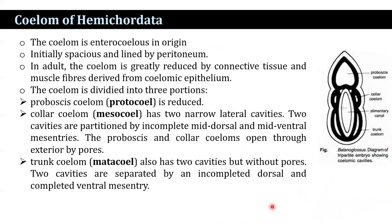The coelom is enterocoelous in origin, initially spacious and lined by peritoneum. In the adult, the coelom is greatly reduced by connective tissue and muscle fibers derived from the coelomic epithelium.